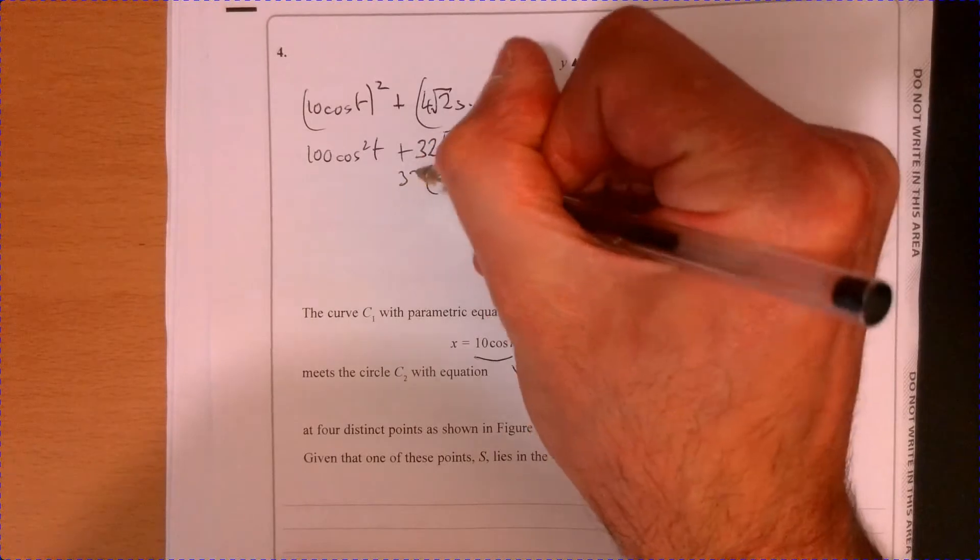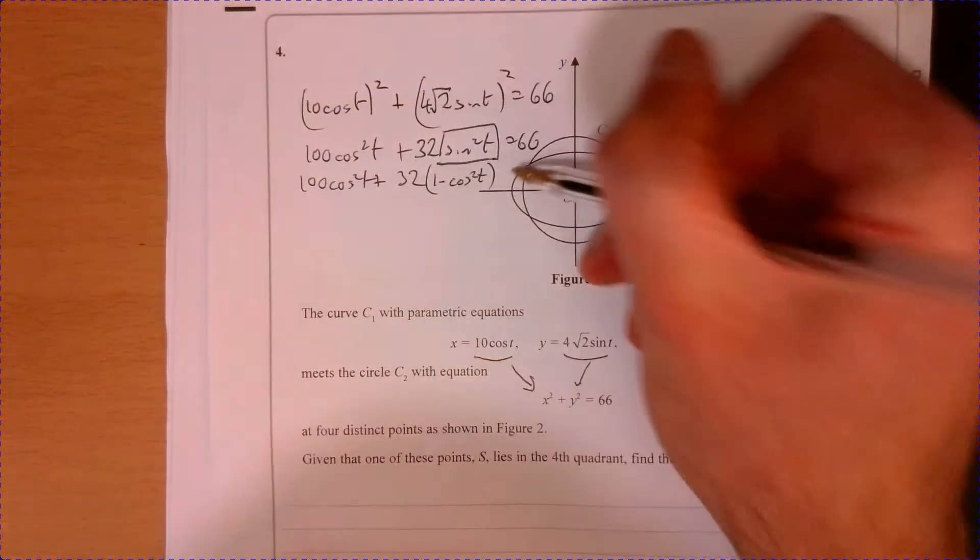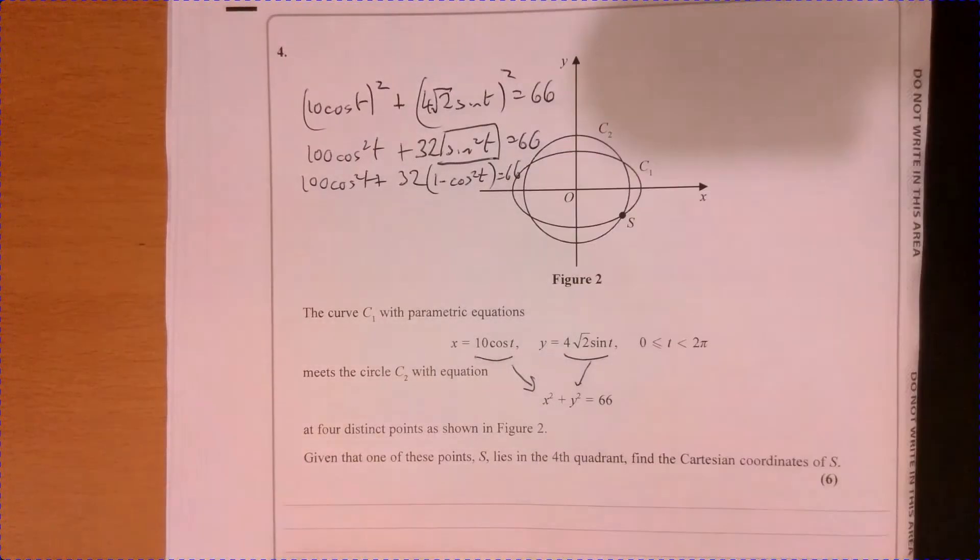I'm going to multiply that by 32. We've still got 100 cos squared T. And that lot is equal to 66.